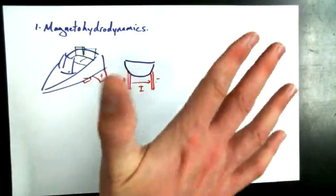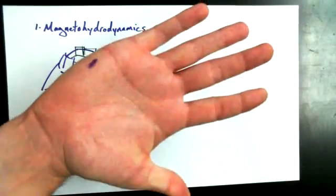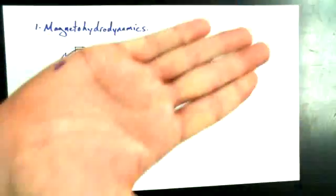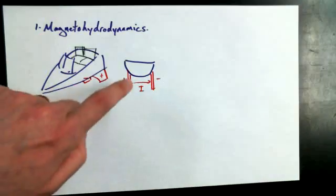Magnetic field, right? Thumb is the current, and the palm is your force. So if I'm looking at this boat from behind, what I want this boat to do is push on the water. I want it to push on the water. Ooh, 3D. This is 3D. Okay, so I want the back of this boat to push out of the page on the water if this boat's going to get pushed forward. So we're thinking three-dimensionally here.